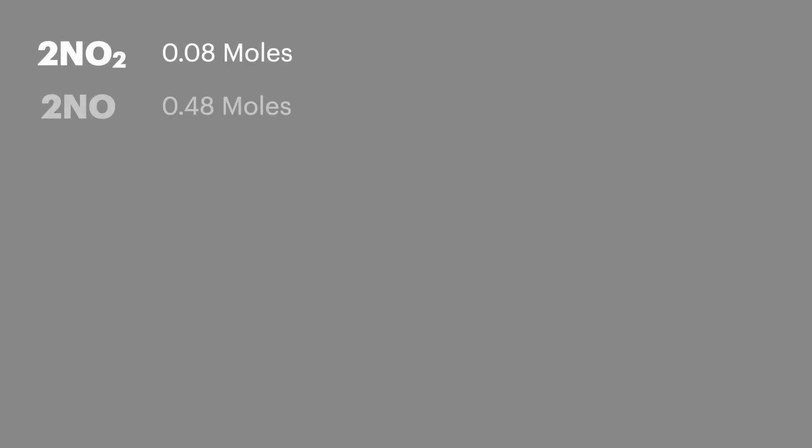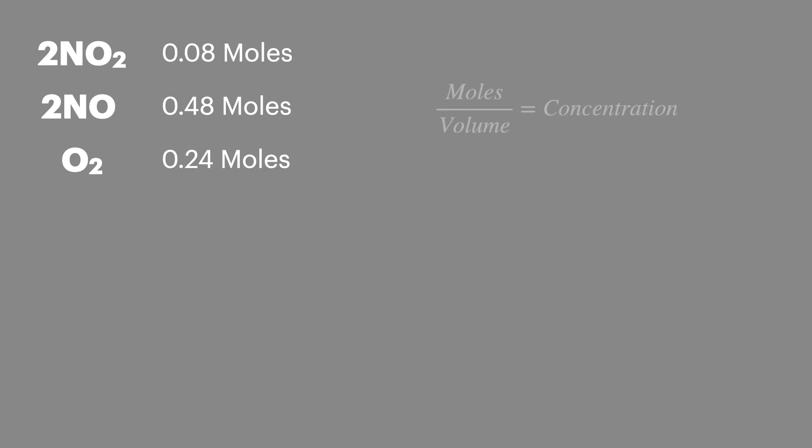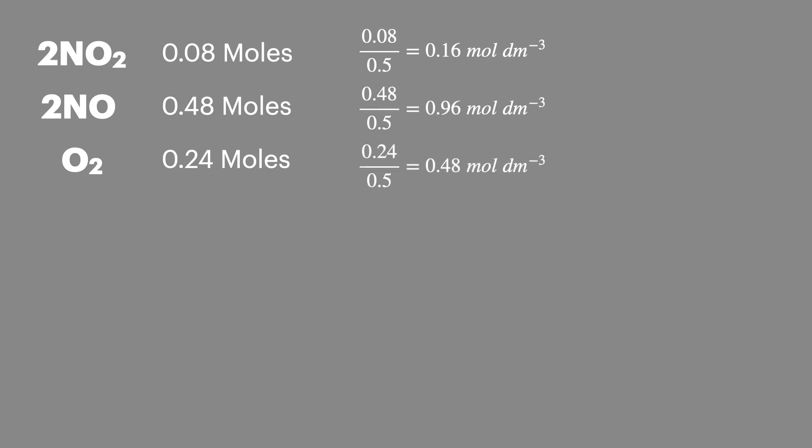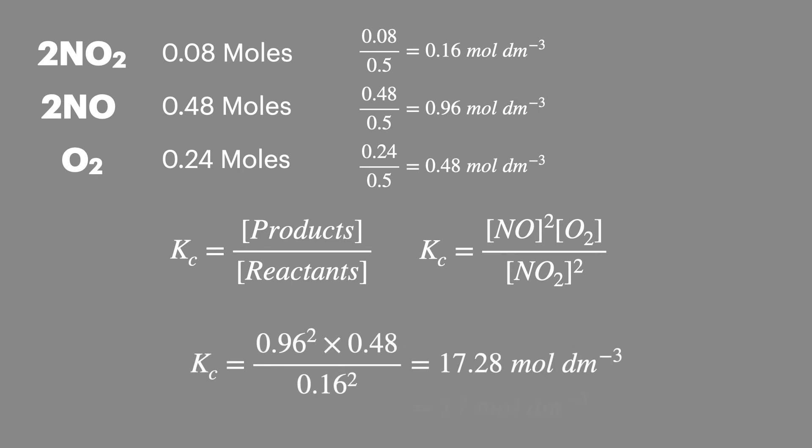In the previous step we calculated the number of moles present at equilibrium for each species in the reaction. As you remember Kc uses concentrations so we'll convert each of these values to concentration by dividing the number of moles by the volume. Once we have these concentrations we can write out a Kc expression for the equilibrium. We'll then add the values in and calculate Kc finally checking we have the right number of significant figures. I've looked at Kc calculations in more detail in a previous video and I'll put the link in the description below.